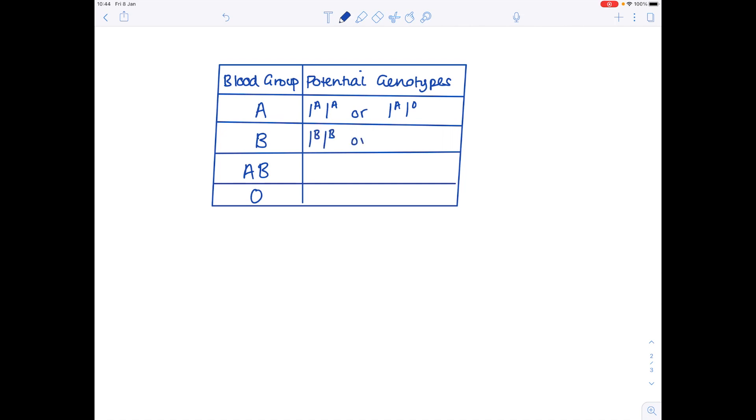You could have the homozygous version or you could have the version which is combined with that O allele. AB remember A and B are codominant so this is the only potential genotype and because O is recessive the only potential genotype for that final blood group is IOIO.